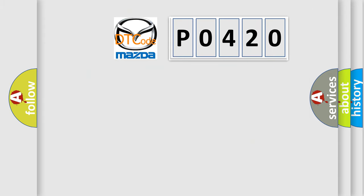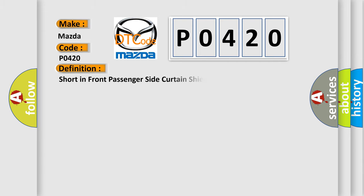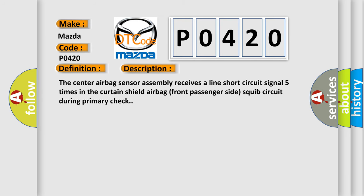So, what does the diagnostic trouble code P0420 interpret specifically for Mazda car manufacturers? The basic definition is front passenger side curtain shield squib circuit. And now this is a short description of this DTC code. The center airbag sensor assembly receives a line short circuit signal five times in the curtain shield airbag front passenger side squib circuit during primary check.